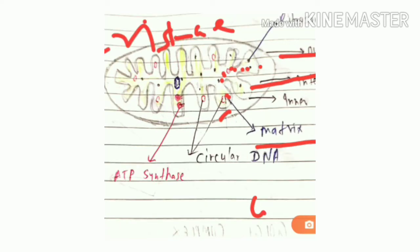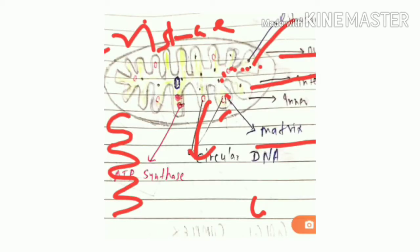Mitochondria have their own ribosomes and circular DNA, as you can see in the structure. Because mitochondria have their own DNA — which can replicate — and their own ribosomes — which can form proteins — mitochondria are known as self-replicating and semi-autonomous units of the cell.